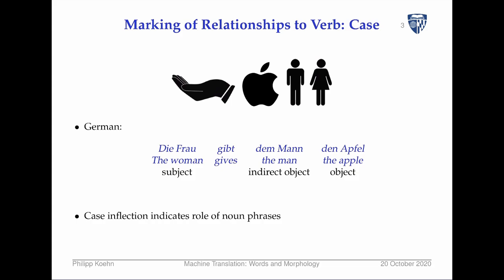In German, this can be done by noun inflection. The verb 'gibt' (gives) tells us the subject is singular. In English you'd say 'the woman gives the man the apple' — word order clarifies the relationship. In German, if you look closely at the determiners, they are all forms of the word 'the' but they indicate case.